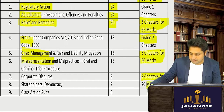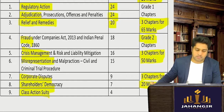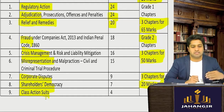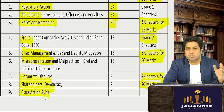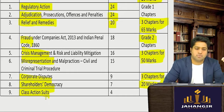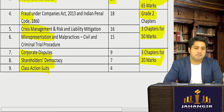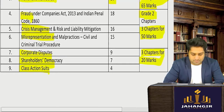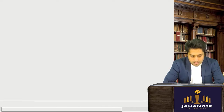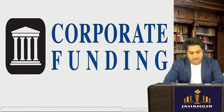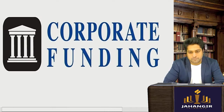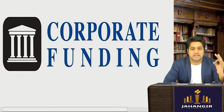Grade three chapters are three chapters for around 20 marks — that's corporate dispute, shareholder democracy, and class action suits. These are mostly chapters 1, 2, and 3. Since the subject is quite simple, they have not asked too much from these chapters in examinations.